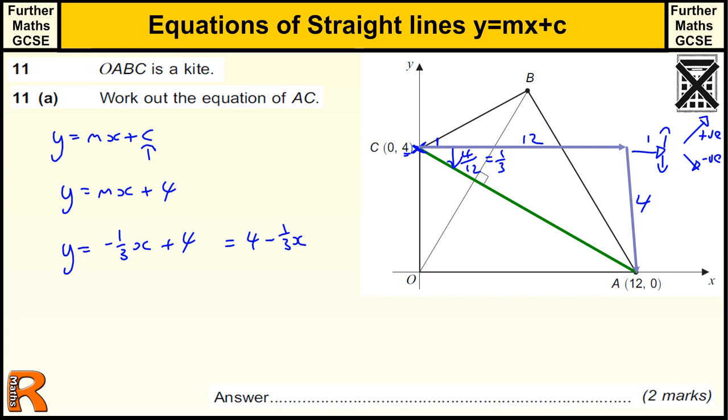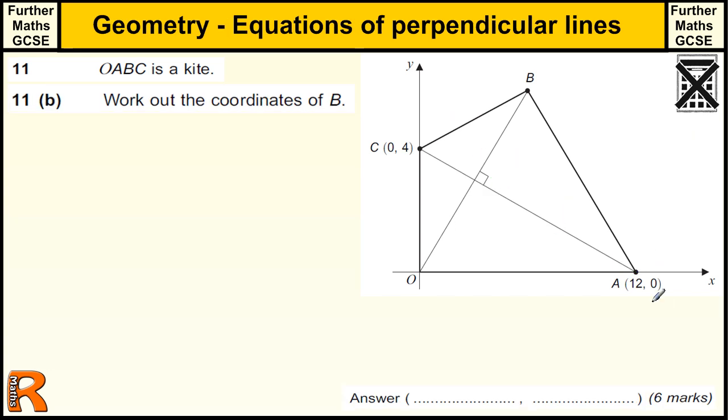Part B: We just worked out that AC is y equals minus one-third x plus four, so the gradient of this line is minus one-third. We need to find the equation of this line here, OB, because we want to work out the coordinates of point B. First of all, it goes through zero, so it's y equals something x with no constant.